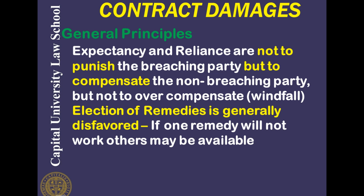If one remedy fails, there may be others available. An example of this is the Gruber case, where the plaintiff was not able to offer sufficient proof of their expectancy damages, and the court permitted a showing of reliance in place of it.